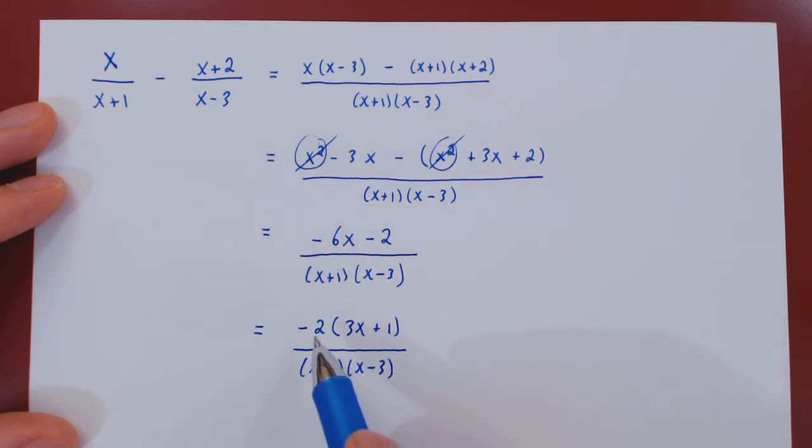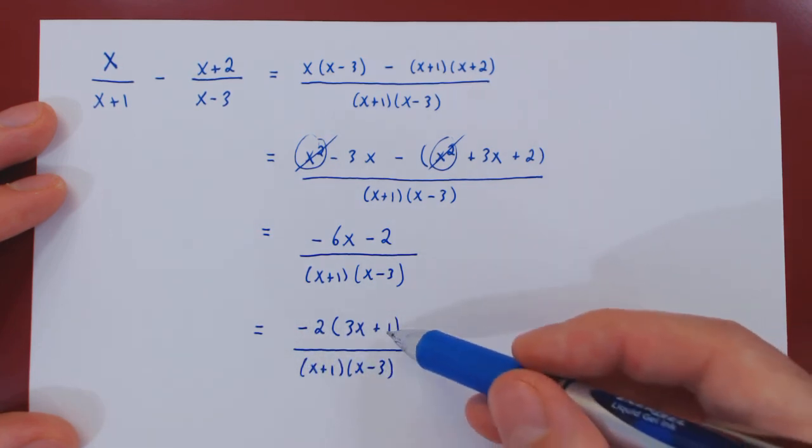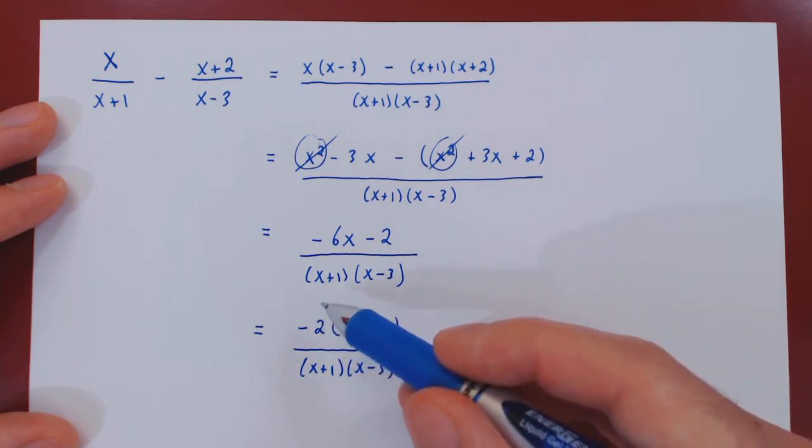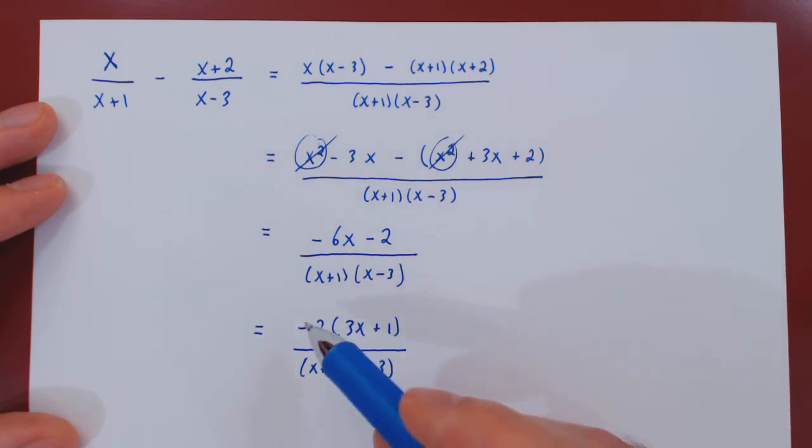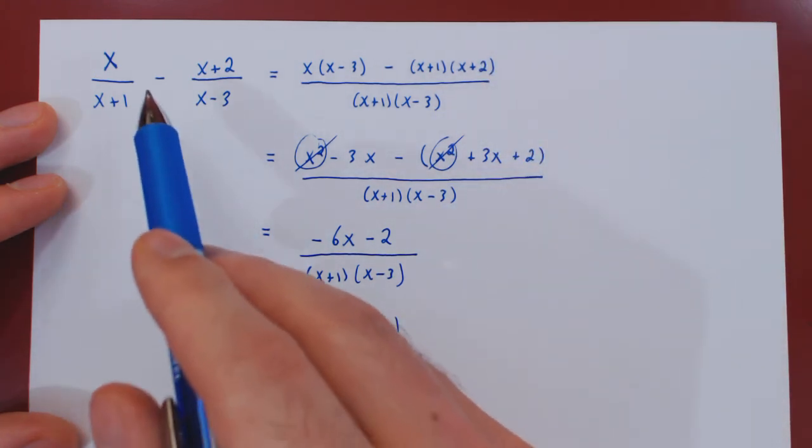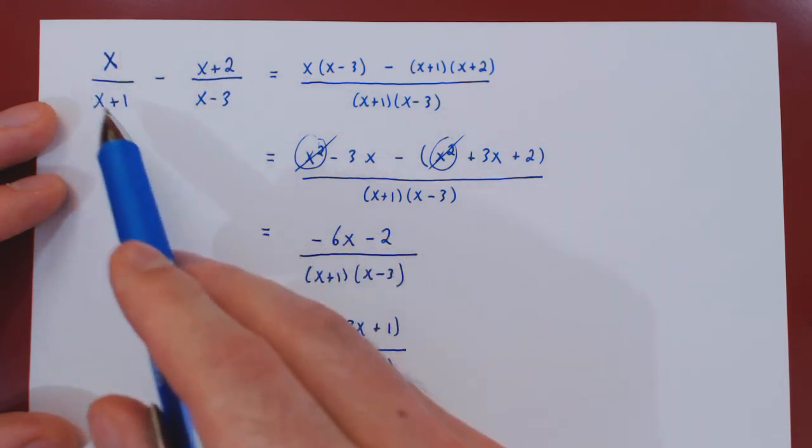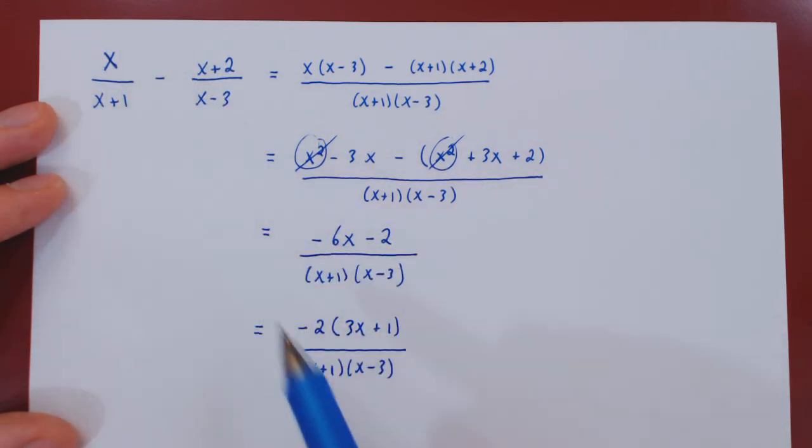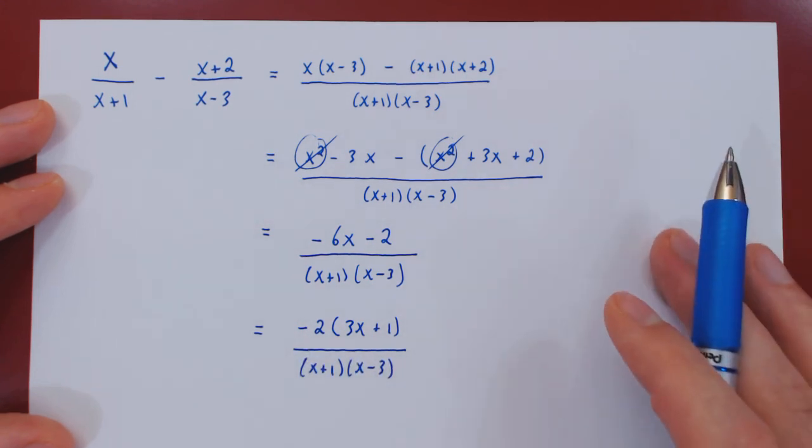So now everything on top is fully simplified and factored. The same goes for the bottom of our fraction. And as our last step, we look for common factors on top and on the bottom that we can cancel. And it's pretty clear here that there are no such factors, so this is our final answer. Again, rearranging the original difference of two fractions as a single fraction that is fully factored, on top and on the bottom.